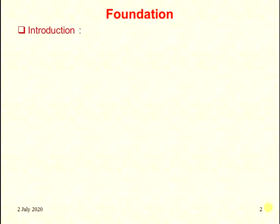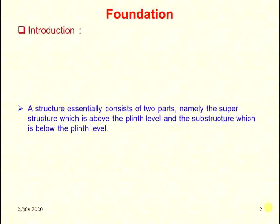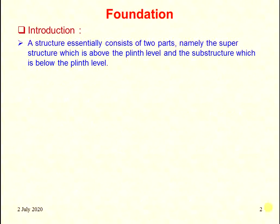Introduction: A structure essentially consists of two parts — the superstructure, which is above the plinth level, and the substructure, which is below the plinth level. The superstructure is the part above the ground level.